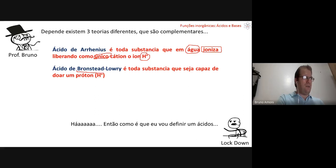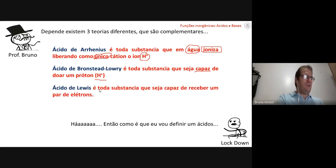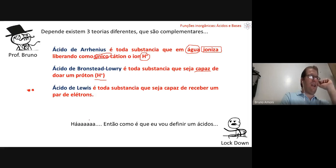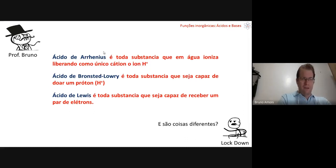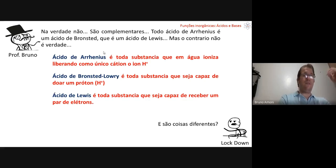Another definition — which you'll see more in analytical chemistry and physical chemistry — is the Brønsted-Lowry acid: every substance capable of donating a proton. Water is no longer required. The Lewis acid is every substance capable of receiving an electron pair. These definitions are complementary: every Arrhenius acid is a Brønsted-Lowry acid, which is a Lewis acid, but the reverse is not necessarily true.